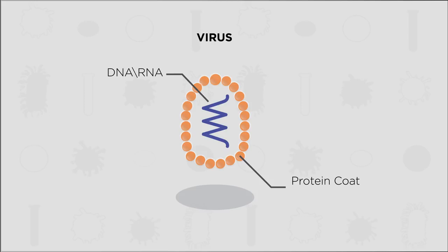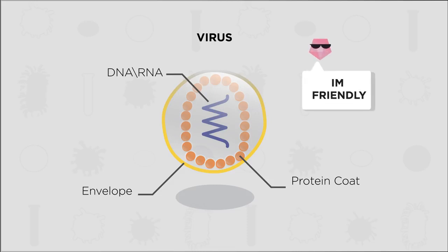Sometimes a membrane called an envelope surrounds a virus particle. This envelope isn't made by the virus, but is actually stolen from the membrane of the host cell. This is a great strategy by the virus — it makes it harder for the host cell to identify the virus as foreign.